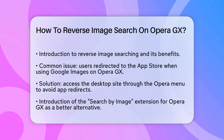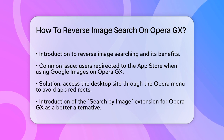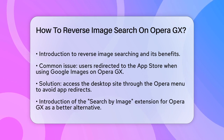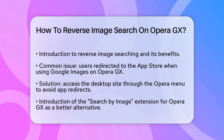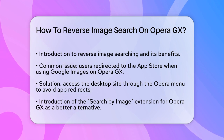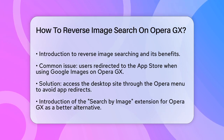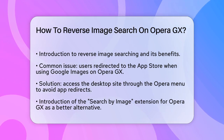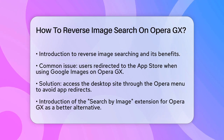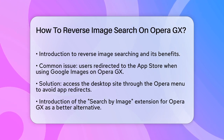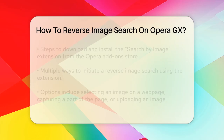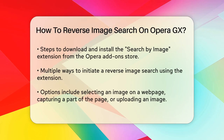Let's talk about a common issue some users face. When trying to perform a reverse image search on Google Images using Opera GX, you might be redirected to the App Store to download the Google app. This can be frustrating, but there's a simple fix. You can force Google to give you the desktop site by using an option in the Opera menu, so you can use the full functionality of Google Images without the app redirect.